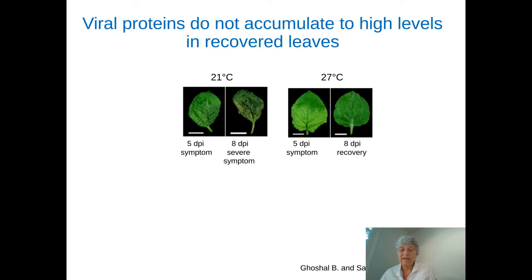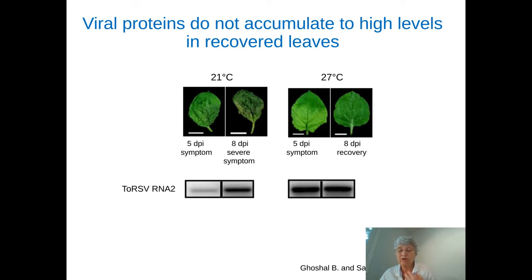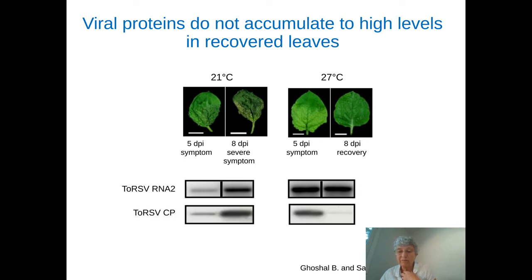Bashudev looked at what's happening in leaves at 21°C or 27°C — initial leaves or leaves later in infection that were severely diseased at 21°C or recovered at 27°C. He first confirmed that the concentration of viral RNA was maintained in recovered leaves. But interestingly, when he looked at the level of viral protein, he saw that while there was high concentration of viral proteins early in infection at 27°C, there was very little viral protein later in infection. In contrast, at 21°C at 8 days post infection, there was a very high concentration of viral proteins. So something is happening there.